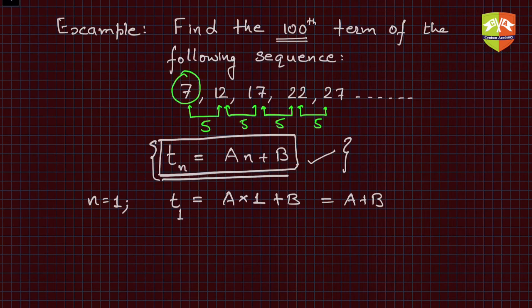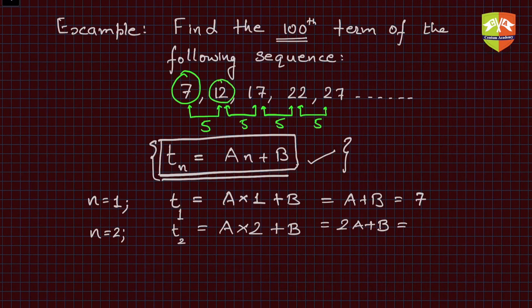What about t2, when n = 2? It will be t2, and if you put n = 2 in the relationship, you'll get A times 2 plus B, which is 2A + B. The value of the second term from the given sequence is 12, so 2A + B = 12.